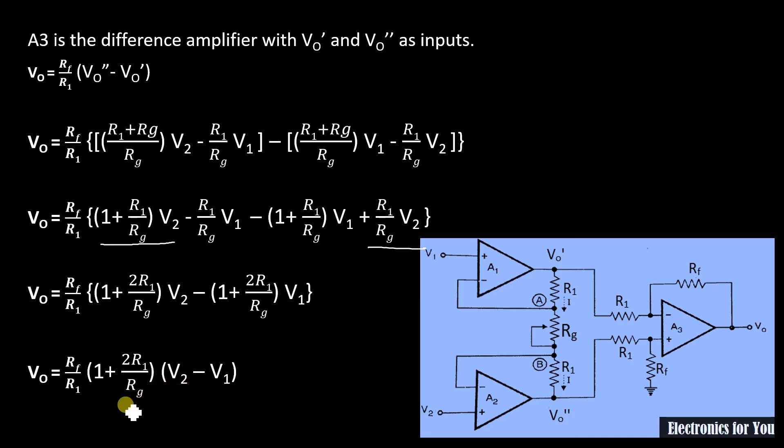Note that by varying RG we can vary the output voltage. This is the expression for the output voltage of an instrumentation amplifier using 3 op amps.